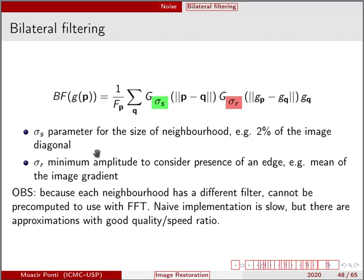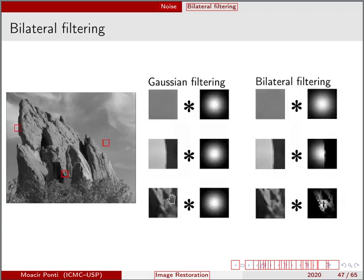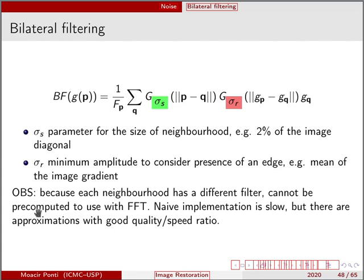And the problem of this filter, although it's a very good filter, is that because each neighborhood has a different filter, as we saw here, we cannot compute this filter using the FFT. And the naive implementation of this filter is very slow, although there are approximations with good quality and speed ratio. So the bilateral filtering filter is a filter that you should consider when you want to filter an image, but you also want to preserve borders.